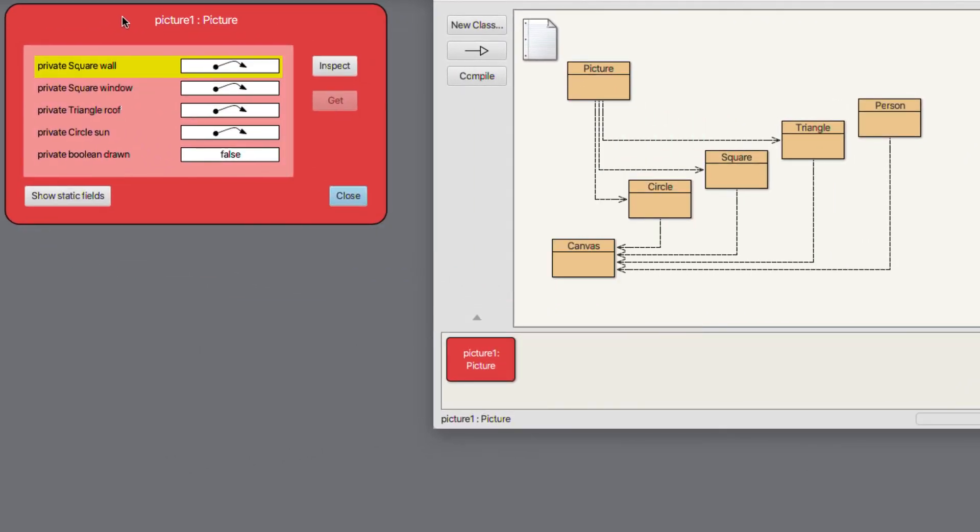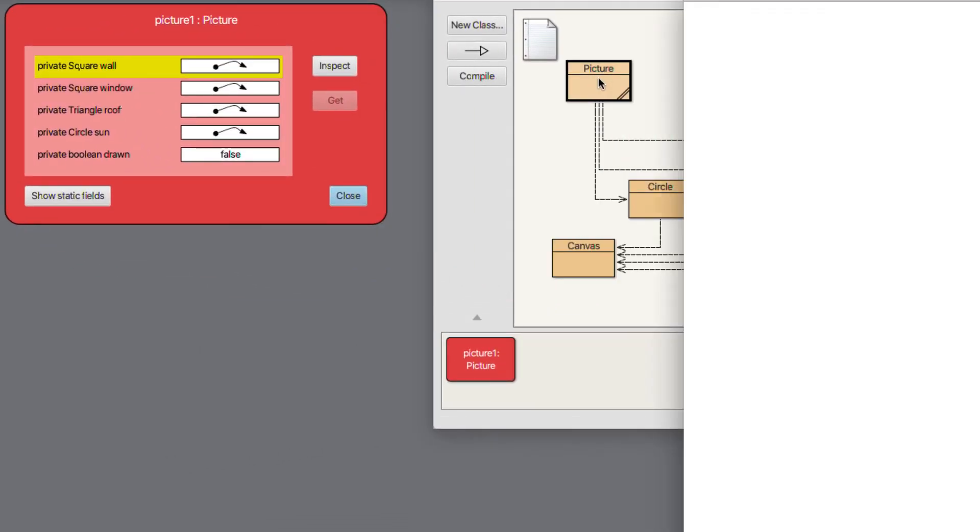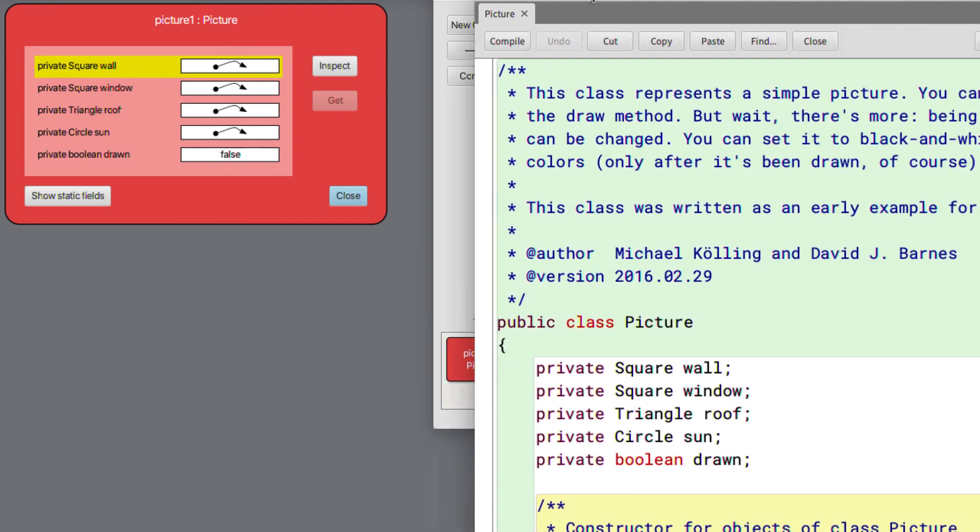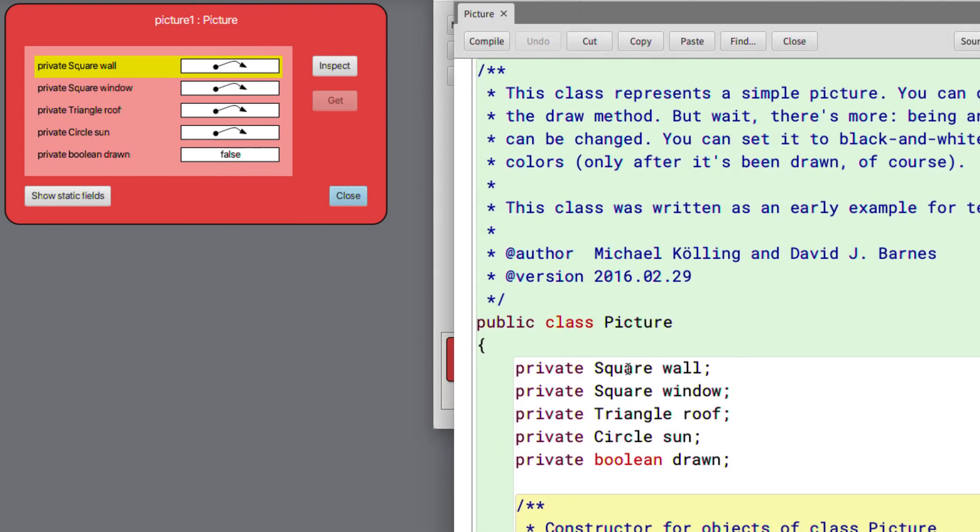So here we're seeing square, triangle, circle, boolean corresponding exactly to what we see in the inspector over here. And as a result,